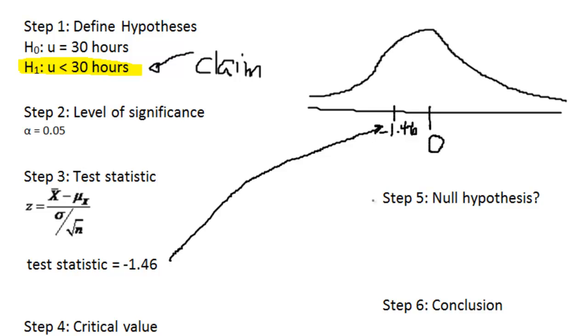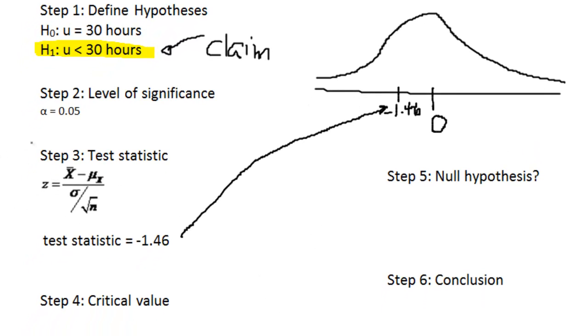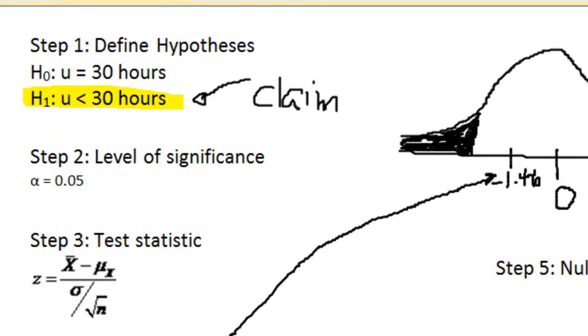Now that's a negative z value, so it's going to be on the left side of zero. So if I was to go back to my drawing, you would see that if you put zero in the middle, our test statistic is negative 1.46, so somewhere over here, to the left side of zero. There's our test statistic coming from this calculation. The critical value that we're going to come up with in step four is coming from step two, from that level of significance.